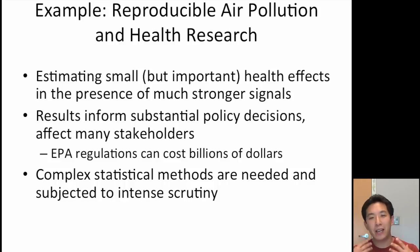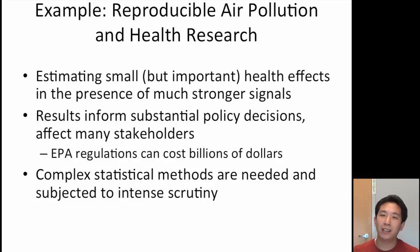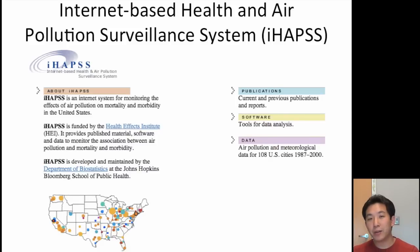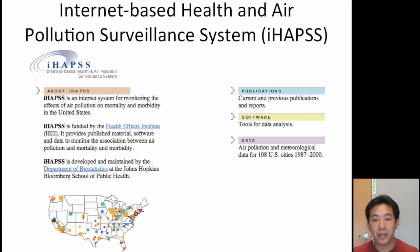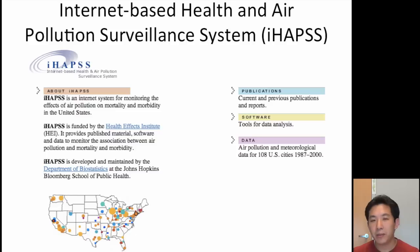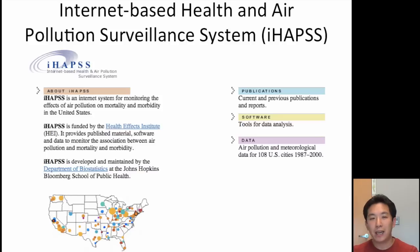The combination of an inherently small signal, large impacts, and complex statistical methods almost requires that the research be reproducible. One of the things we've done at Johns Hopkins is create what's called the Internet-Based Health and Air Pollution Surveillance System. We make a lot of our data available, and we make a lot of our statistical methods in the form of R code available, so that the data and many of the results we produce can be reproduced by others.